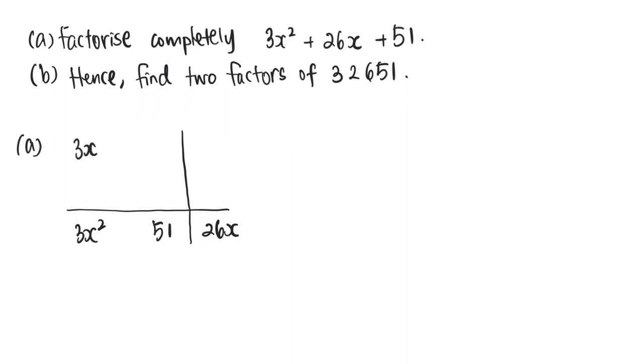So to get 3x², there's only one possible pair: 3x times x. For 51, there's 1 times 51 and 3 times 17.